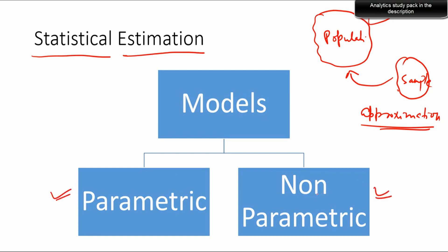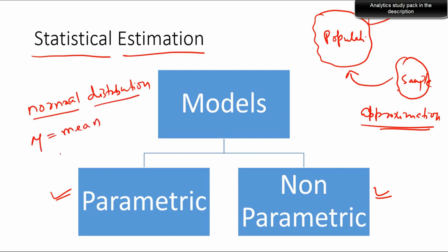Parametric estimation is when your data follows a theoretical distribution. For instance, we have the normal distribution — it's a parametric distribution. Any parametric distribution involves parameters which we find out from the estimation process. The parameters in normal distribution are mu, which is the mean of the data, and standard deviation.